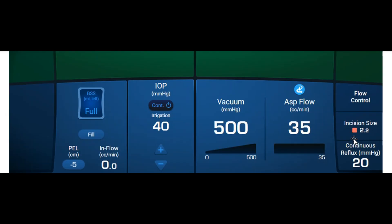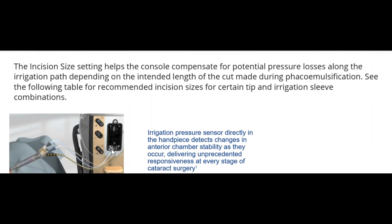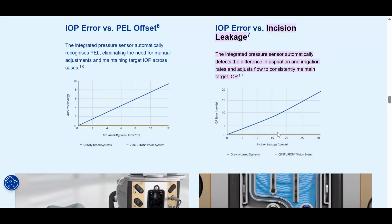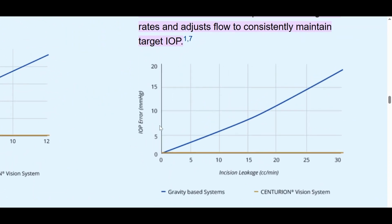Regarding the incision size setting, when you input your incision size the Unity senses pressure losses — that is, irrigation pressure minus aspiration pressure — and compensates for any leakage at the incision. This was already present in the Centurion with Active Sentry, which displayed IOP error versus incision leakage: the IOP error being the difference between irrigation and aspiration pressure.